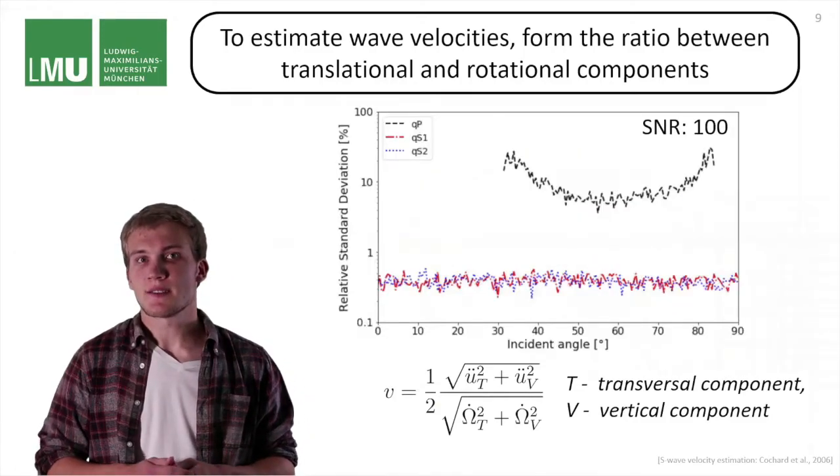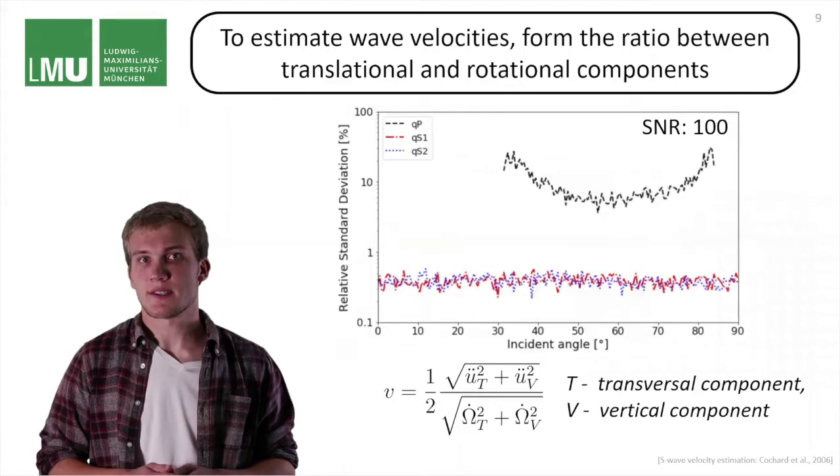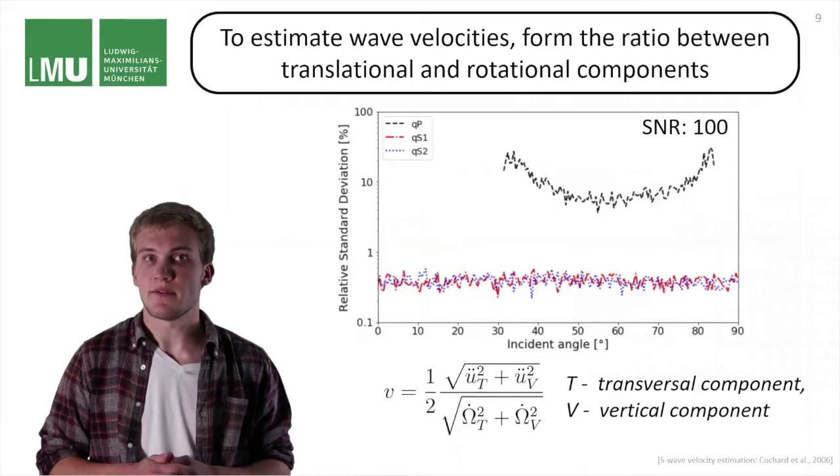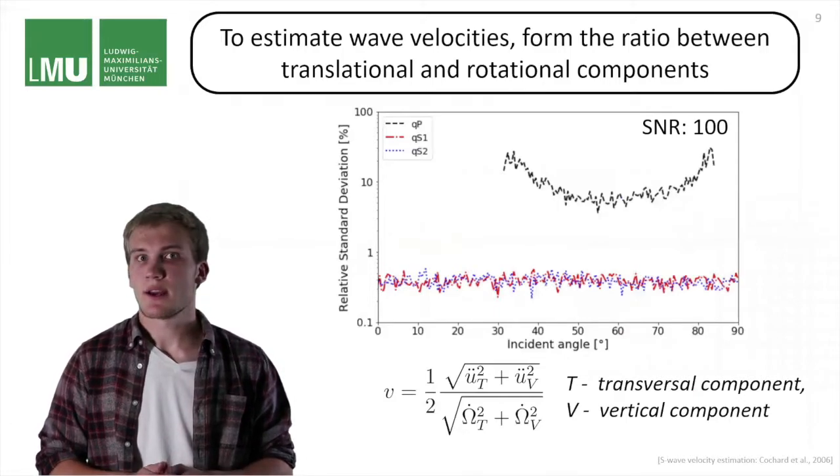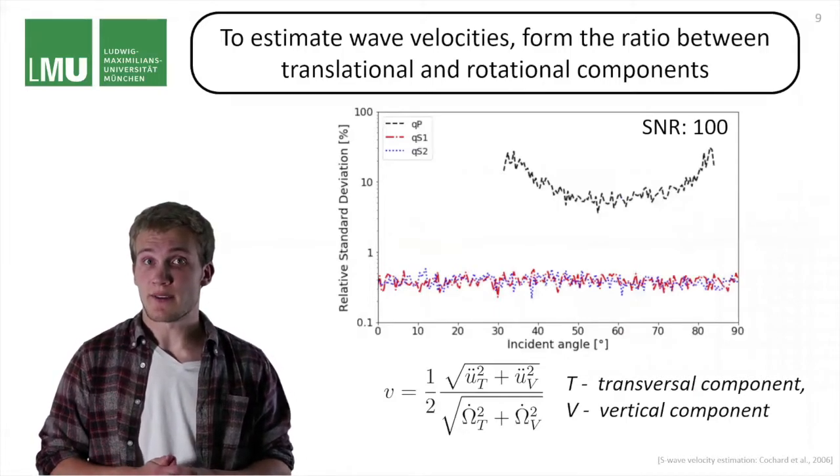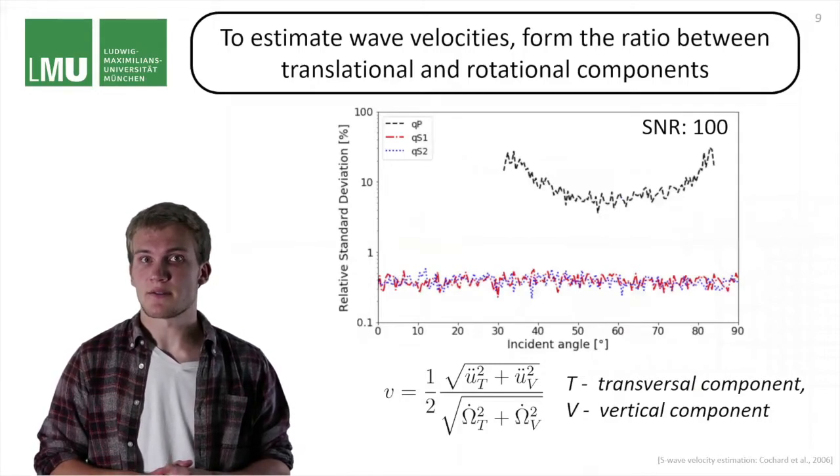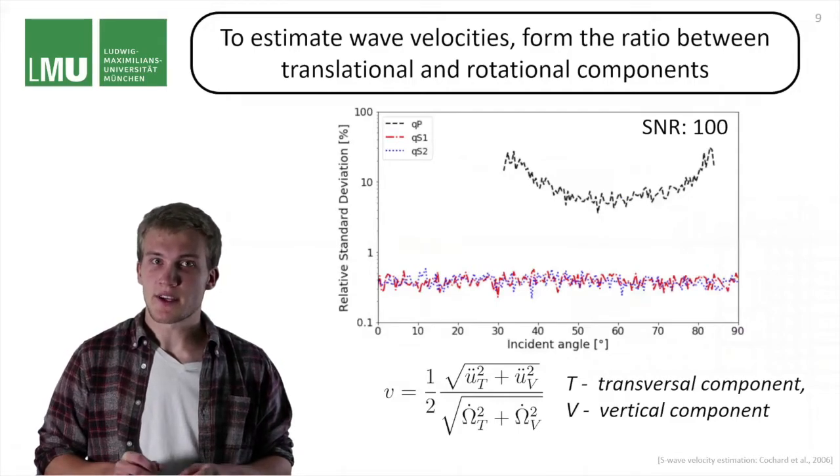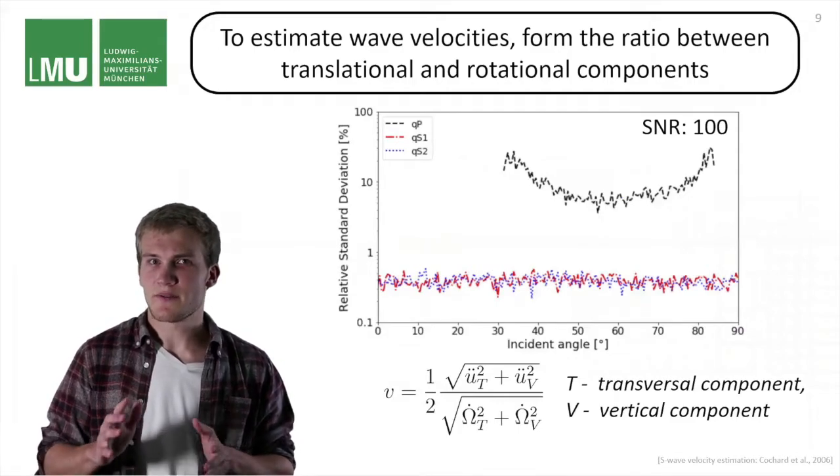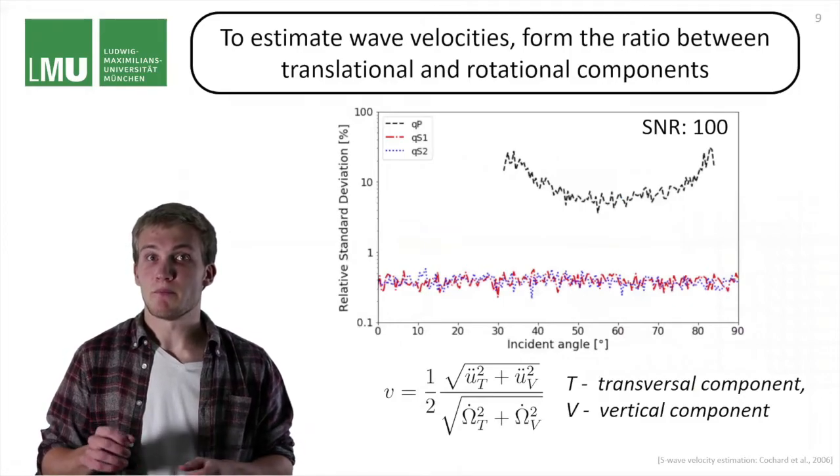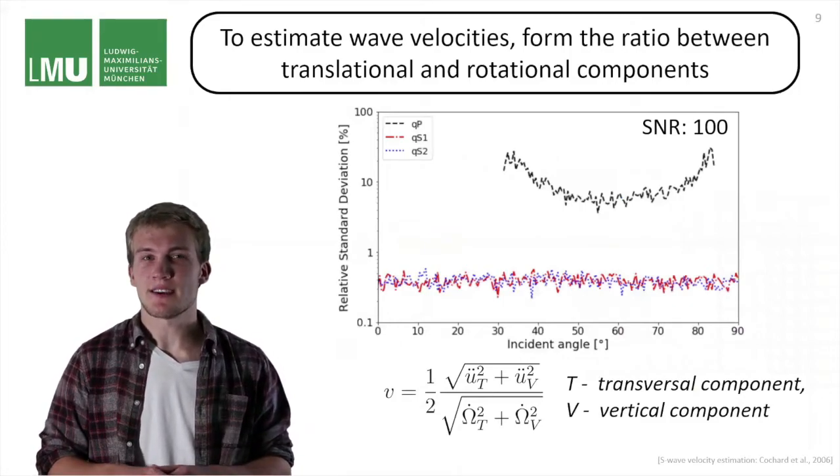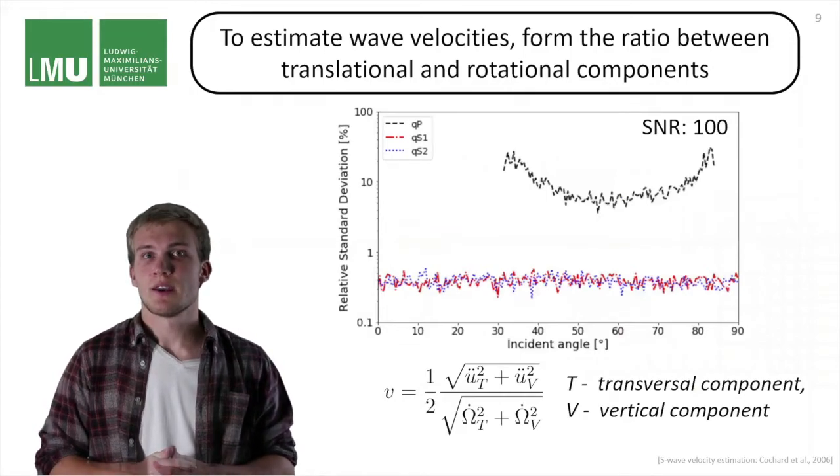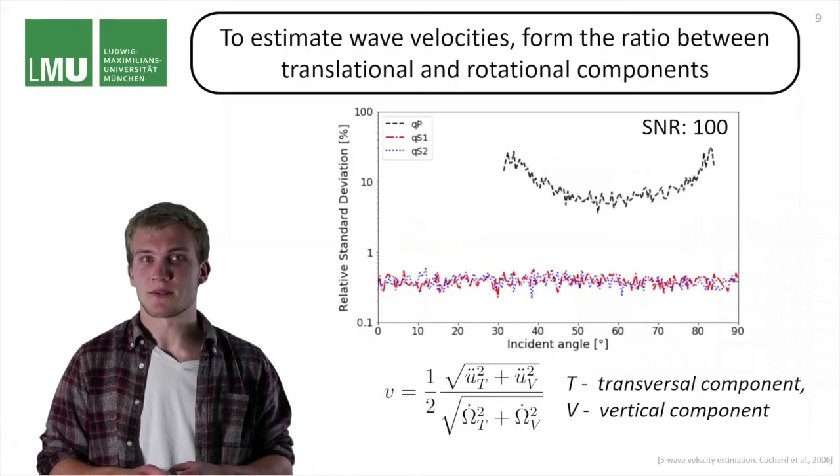Here it shows how the standard deviations of the velocity estimation deviate as a function of the incident angle in a VTI medium. As you can see, S wave estimates for the velocity are independent of the incident angle. This is not the case for the P wave. For this specific rock, there is at around 58 degrees a best direction, so to say, and there are other directions where you simply cannot get an estimate for the P wave velocity. So we may run into problems during the inversion.